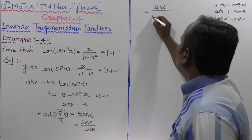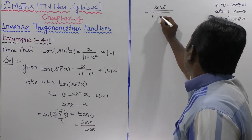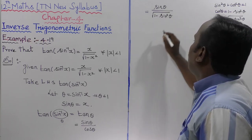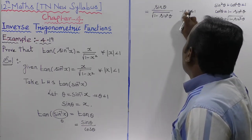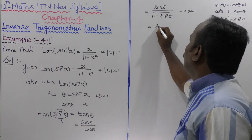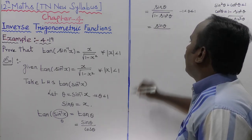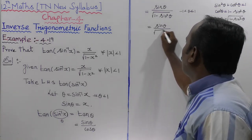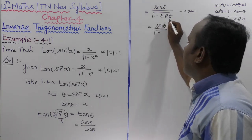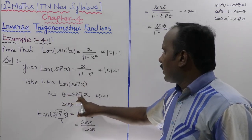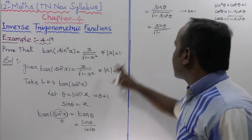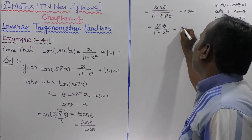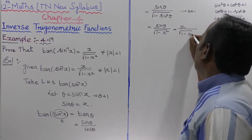Replacing cos theta with root of 1 minus sin squared theta, we get sin theta divided by root of 1 minus sin squared theta. Since sin theta equals x, sin squared theta equals x squared. So the expression becomes x divided by root of 1 minus x squared.